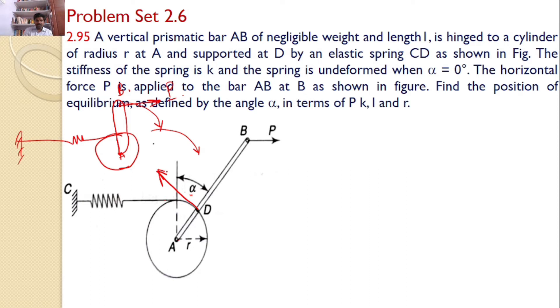The magnitude of the spring force is equal to stiffness into the deflection. How much did the spring get elongated? This is the length by which the spring is elongated. From this sector, I can say that this elongated length of the spring is equal to R into alpha. Hence, the spring force is equal to K into R into alpha.